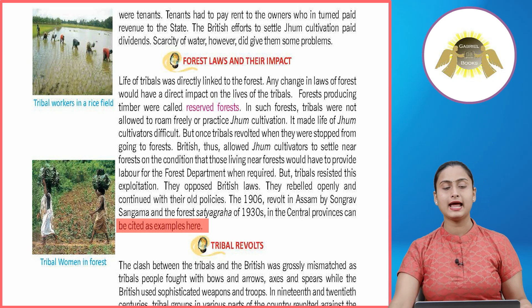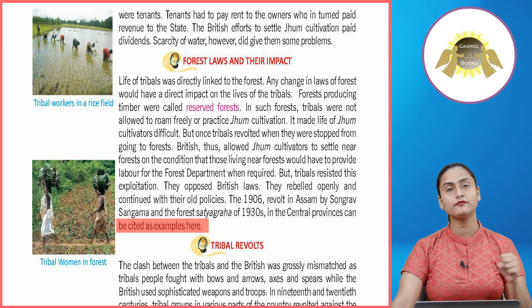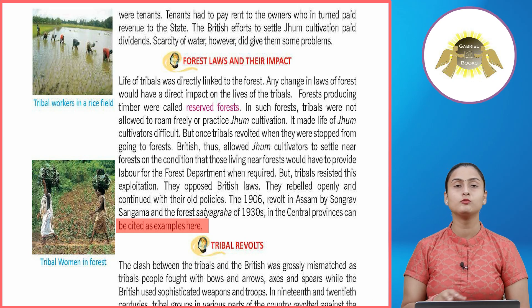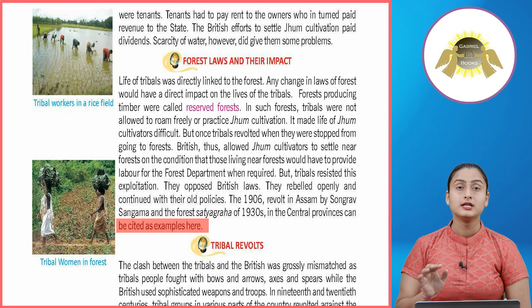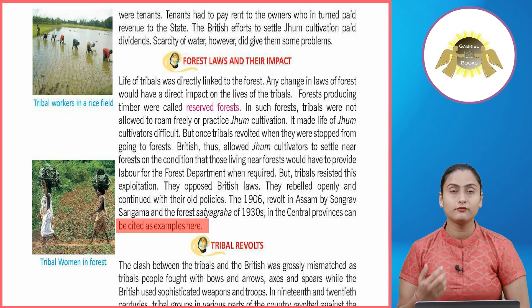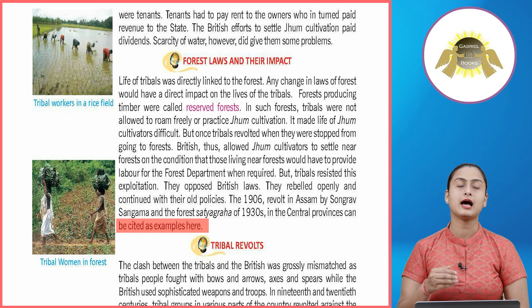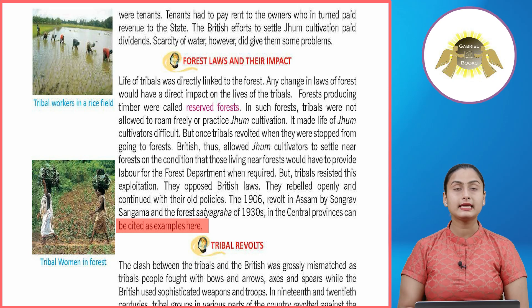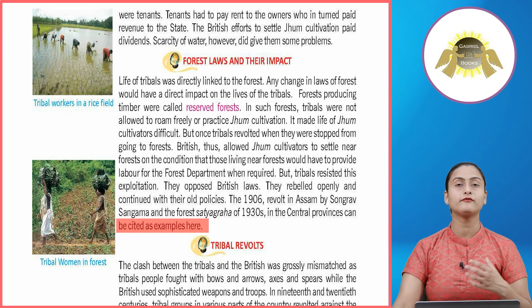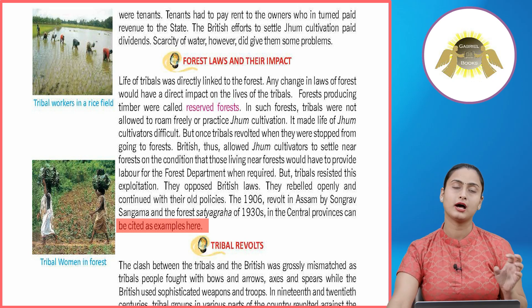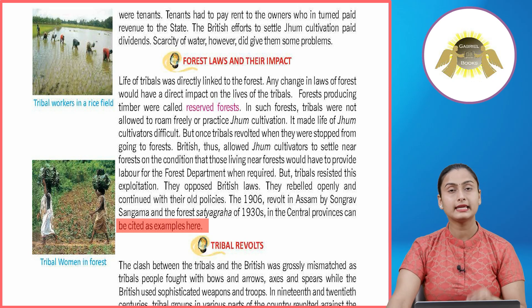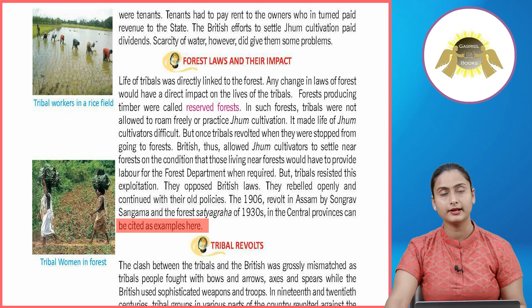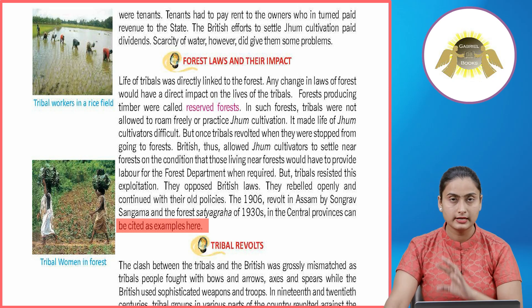The British laws had effectively banned jhoom cultivation on forest land where timber was extracted — those forests were declared reserved forests. When tribal people revolted, the British said they could acquire land near forests on one condition: whenever the forest department needed labor, they would have to provide it. But ultimately, tribal people rebelled against British policies and refused to comply with them.